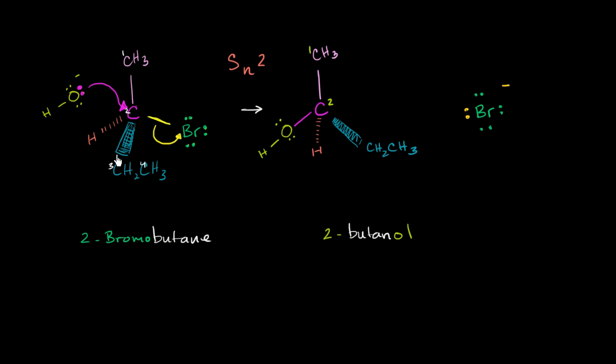So whenever you're thinking about chirality, the convention is take the thing that it's bonded to that has the lowest atomic number and put that in the back. Well, hydrogen has the lowest atomic number out of all of these four things. So you can imagine that being put into the back. And in fact, it's already drawn that way. So it's kind of going into the screen.